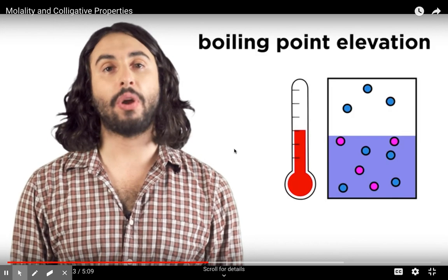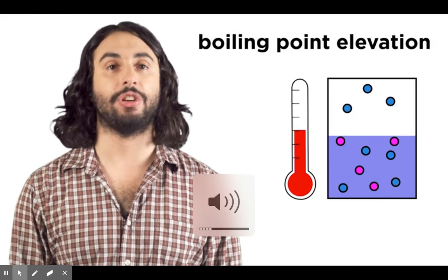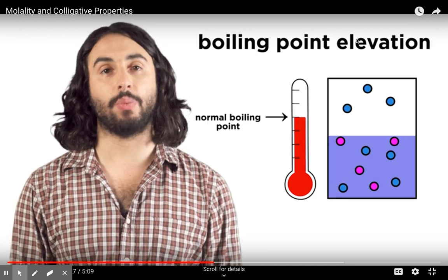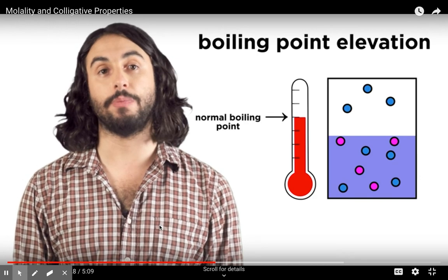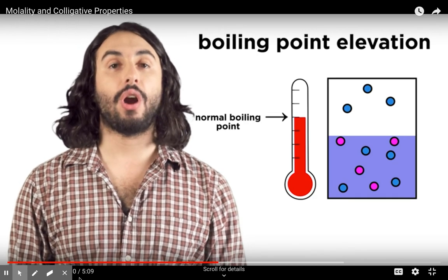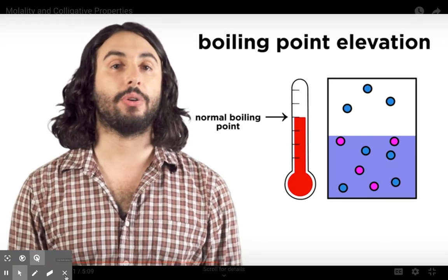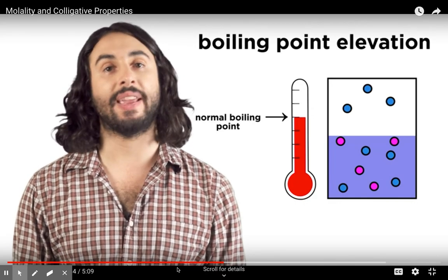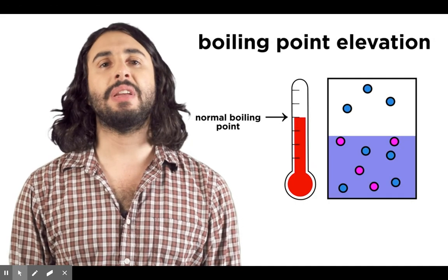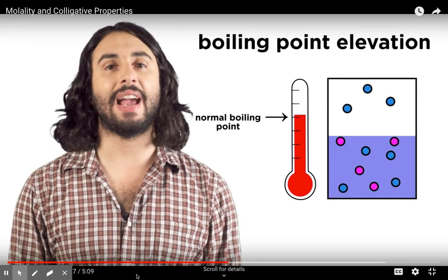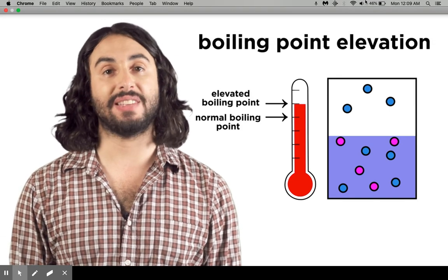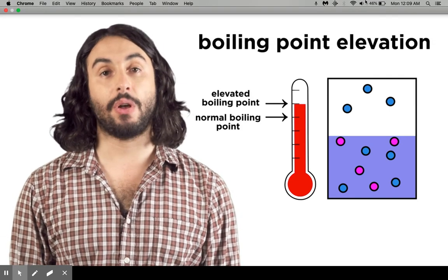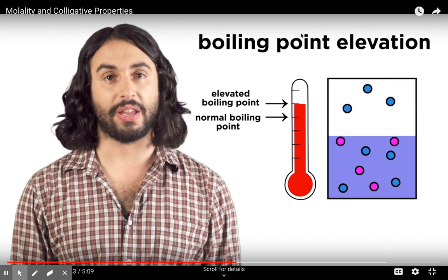The phenomenon is that of boiling point elevation. When a solution is raised to the temperature at which the solvent should boil, again, there are solute particles blocking the solvent molecules from going into the gas phase. This means more heat energy will be needed to compensate for this action, which results in an elevated boiling point.